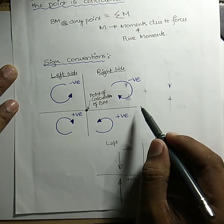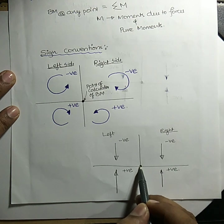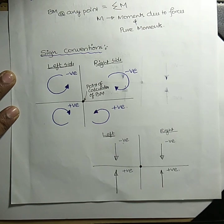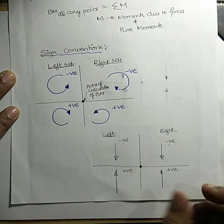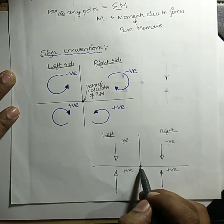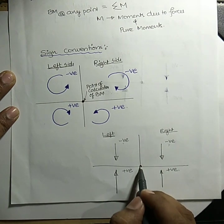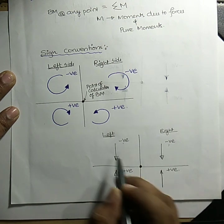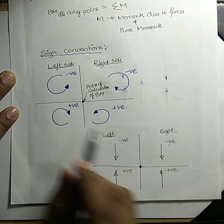If we have forces in the beams because of which bending moment develops, and we calculate bending moment towards the left hand side — downward force is taken as negative and upward force is taken as positive. Similarly on the right hand side, downward force is negative and upward is positive. This is easy to remember: both sides downward is negative, both sides upward is positive.